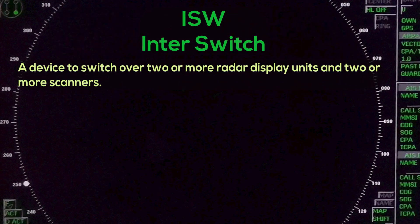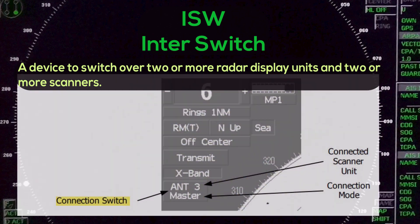ISW — InterSwitch: a device to switch over two or more radar display units and two or more scanners.